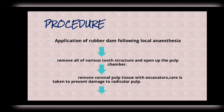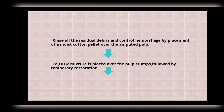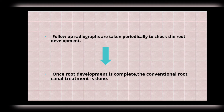For the apexogenesis procedure: first, give proper anesthesia and place a rubber dam. Then remove all infected pulp, taking care to prevent damage to the radicular pulp. After rinsing all residual debris and controlling hemorrhage, place a calcium hydroxide mixture followed by a temporary restoration. Follow-up is done after three months by taking radiographs to check root development. Once root development is complete, conventional root canal treatment is performed.